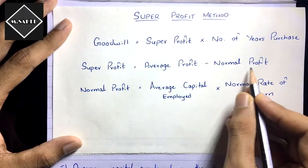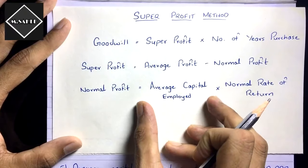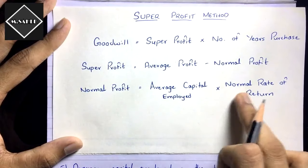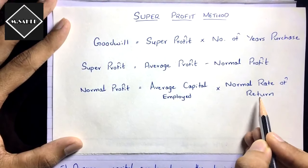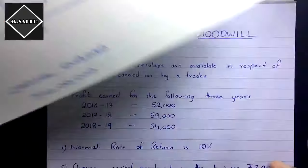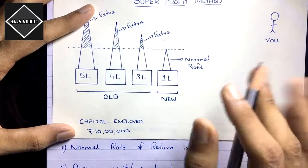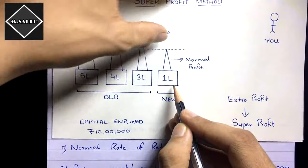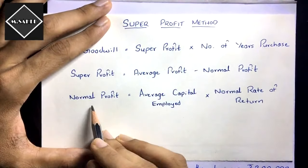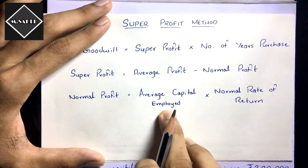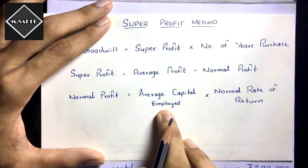Normal profit is also not given in the question — you have to calculate it. The formula is: Normal Profit = Average Capital Employed × Normal Rate of Return. Normal rate of return will be given in the question; it means how much you can expect to earn by investing capital in a new venture in the same industry. Sometimes average capital employed is also not given and you must calculate it.